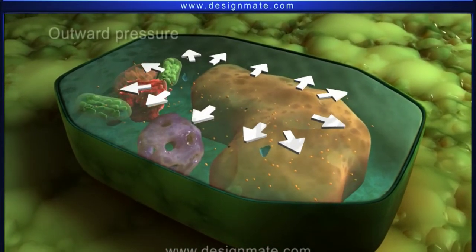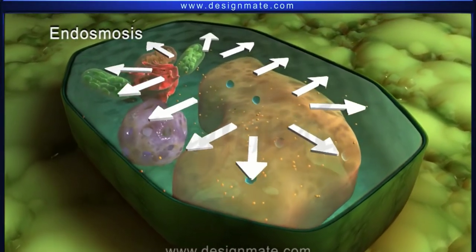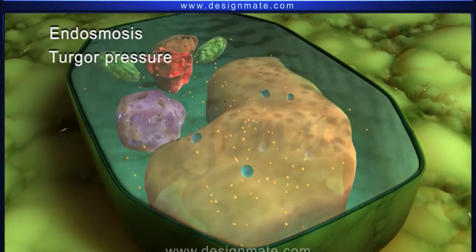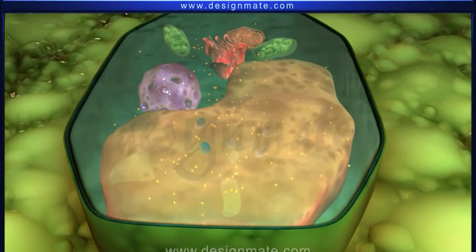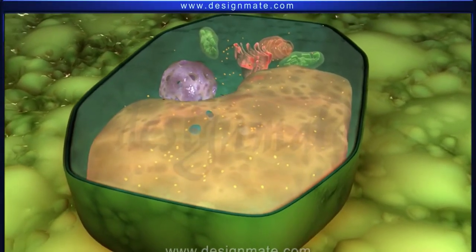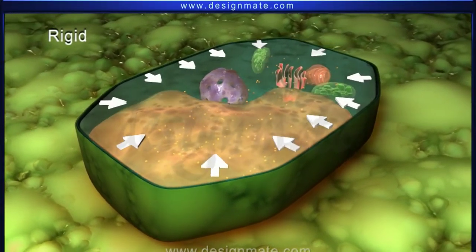This outward pressure exerted on the cell wall due to endosmosis is called turgor pressure. Due to this pressure, the plasma membrane is pressed against the cell wall and becomes stretched. The cell wall, being rigid, tends to exert an equal pressure on the fluid contents of the cell.